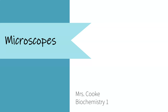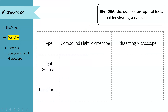Hello scientists! Today we're going to talk briefly about microscopes and explore a little more into the type of microscope we'll use most often in this class. Our big idea for today is that microscopes are optical tools used for viewing very small objects. An optical tool means that we use our eyes to perceive the information, and microscopes bring into focus things that are very small — often things we can't see or see the details of with our naked eye.